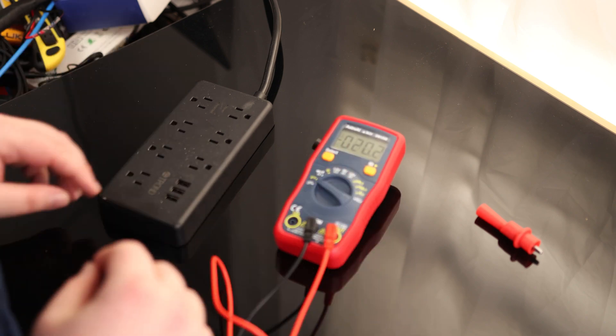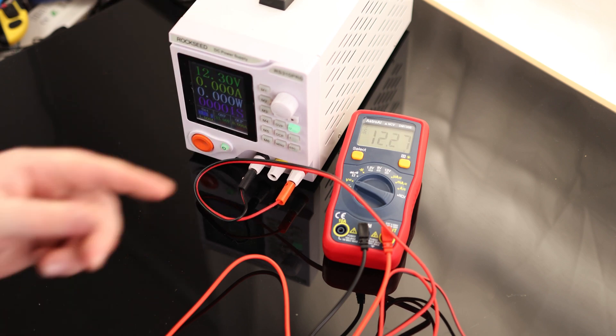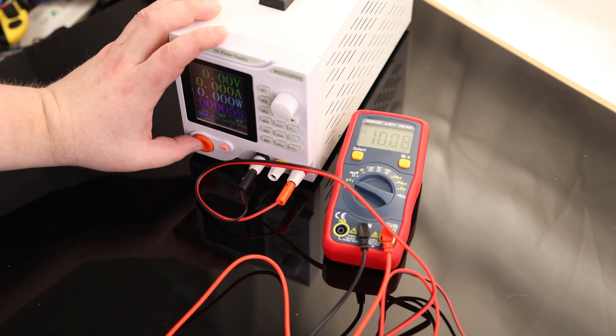And let's check DC. So it says 12.3 volts. Let's see what we get. Yeah, 12.27. So it checks AC, no problem. It checks DC, no problem. This is a perfectly good multimeter.